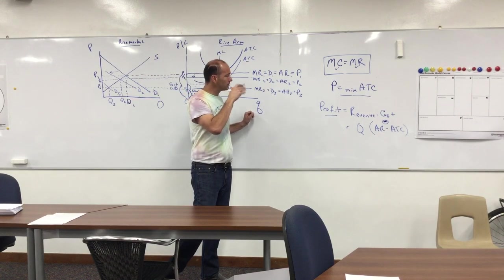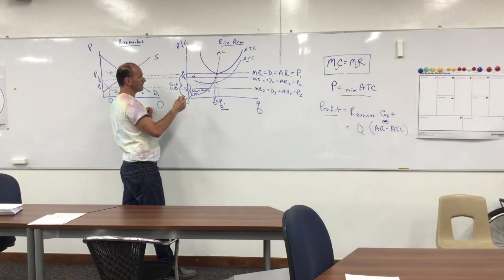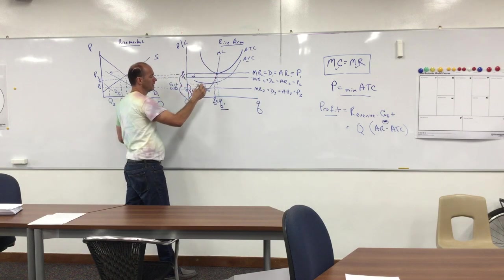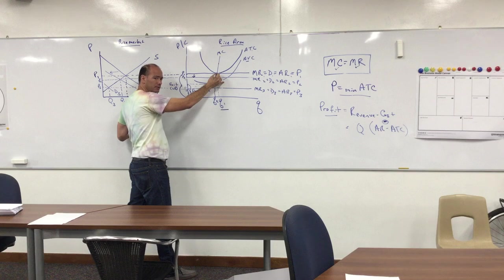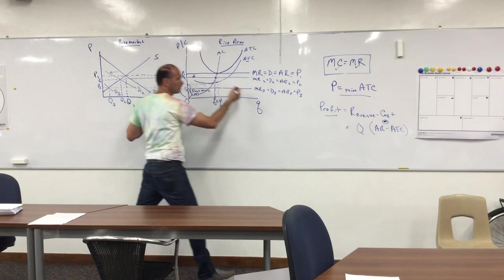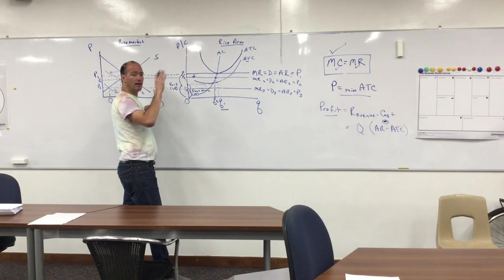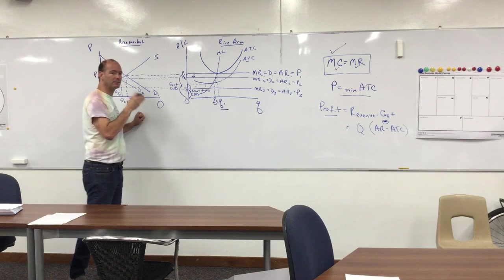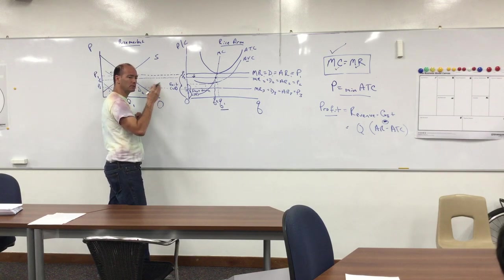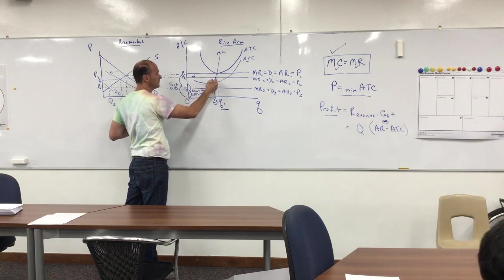To review: the decision rule for output is that the business produces at the point where marginal cost equals marginal revenue. In any market structure, that is always the profit-maximizing level of output — the point at which marginal cost and marginal revenue are equal.